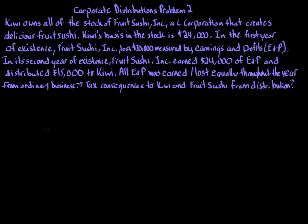We need to determine the tax consequences to both Kiwi and Fruit Sushi regarding the distribution. Whenever we have a corporate distribution, we always start by determining whether it's a property distribution, which includes cash, or a stock distribution, because stock distributions have different rules. Section 317 deals with property distributions and defines property broadly — it includes cash, property as we might think of it, and stock and securities, but does not include stock in the actual distributing corporation. Here we have a cash distribution, so we apply the normal distribution rules under §317.